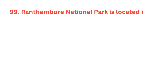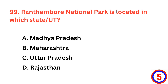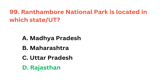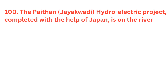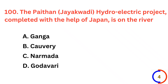Ranthambore National Park is located in which state or UT? The correct answer is option D, Rajasthan. The Paithan Jayakwadi hydroelectric project, completed with the help of Japan, is on which river? The correct answer is option D.